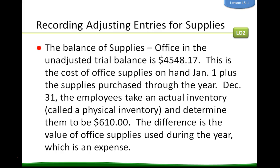The balance of supplies office in the unadjusted trial balance is $4,548.17 — this is the cost of supplies on hand January 1st plus supplies purchased through the year. On December 31st, employees take a physical inventory, counting every specific item, and determine the value to be $610. The difference is the value of office supplies used during the year, which is considered an expense.